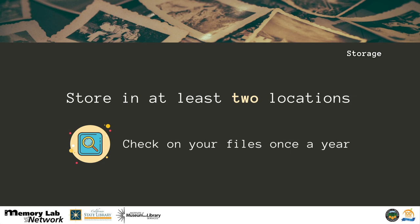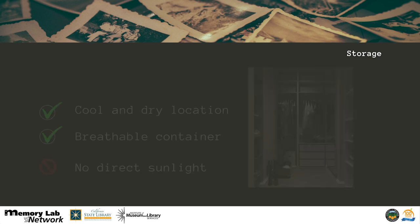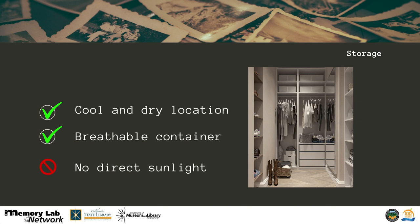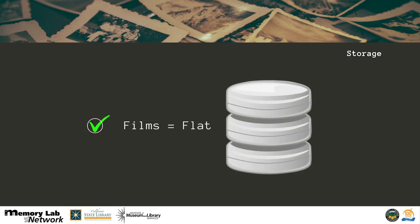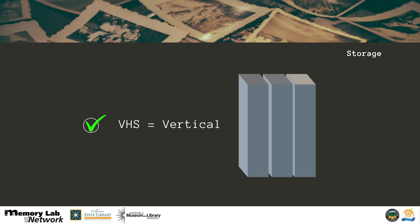Since we covered digital storage in the photo preservation portion, we'll focus on properly storing your originals here. Proper storage is vital for the preservation of your originals. Store your originals in a cool, dry environment protected from high humidity and direct sunlight — not basements or attics; a closet is usually best, and off the floor ideally. Put them in a container that allows them to breathe. For film, you can purchase vented cans. For videotapes, a sturdy archival box will work. Do not store inside plastic bags or with rubber bands around them, and try not to put too much weight on top of them. Films should be stored flat. Videotapes should be stored vertically, like books.